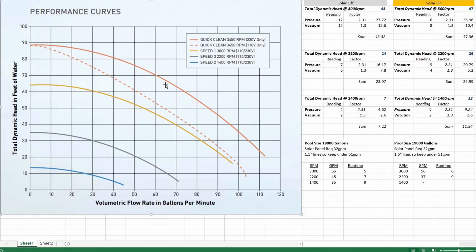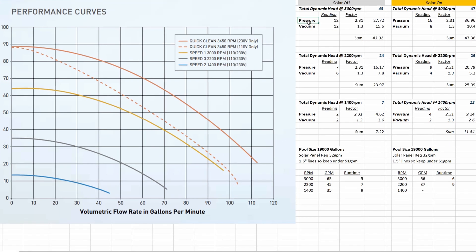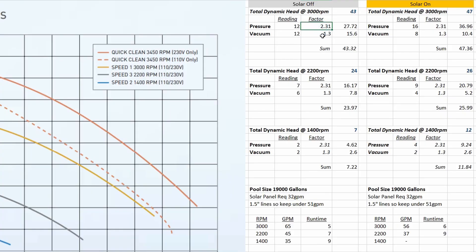So to get my gallons per minute I just need to figure out my total dynamic head using the pressure and vacuum readings I took outside. So on the right side here you can see that I've recorded the various pressure and vacuum readings of the different RPMs that line up with those performance curves on the left here. So all I need to do is multiply these readings by these factors here and then sum the products to get me my total dynamic head at each RPM.